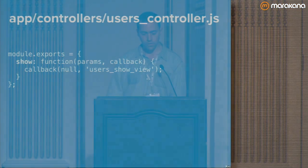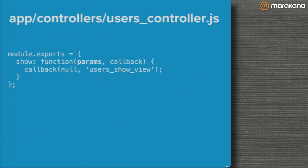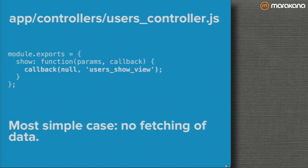Here's the Users controller with the show action — a basic CommonJS module. In the most trivial case, the key is the action name 'show', we pass in params and a callback. Calling the callback with null as the first argument (no error) and specifying the view to render — that's the trivial synchronous case when you're not fetching any data.